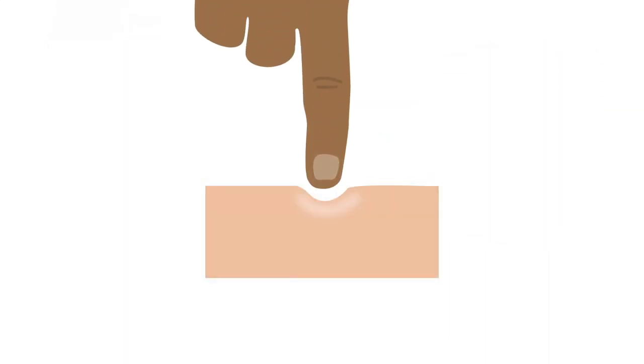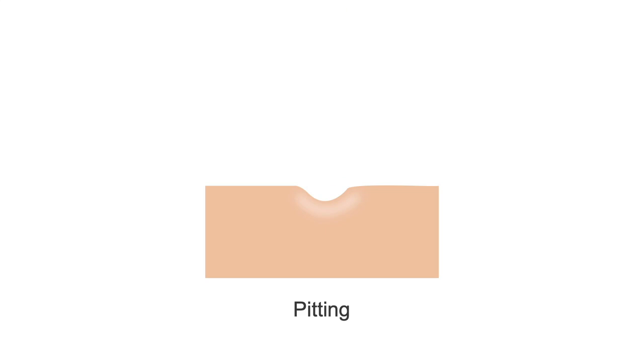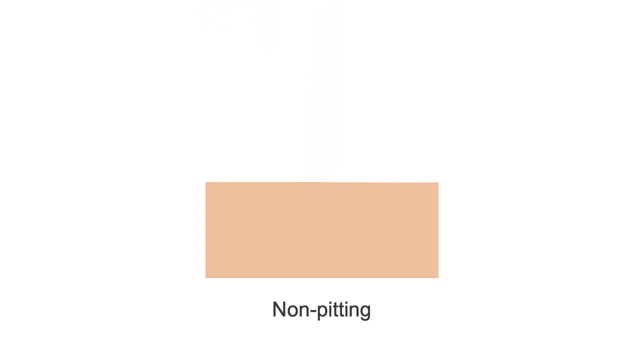To test for pitting edema, apply gentle pressure to the part of the patient's body that has accumulated edema. If there is an indentation that remains in place after you remove your finger, it is pitting edema. If there is not an indentation, it is non-pitting edema.